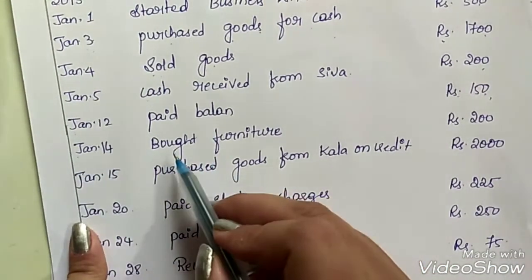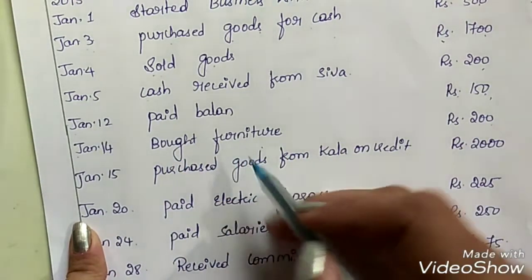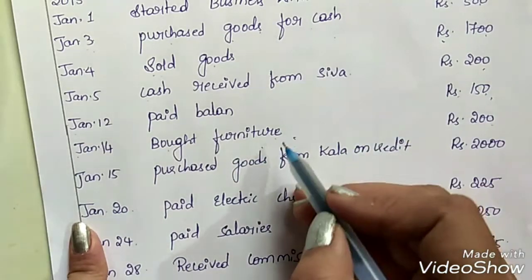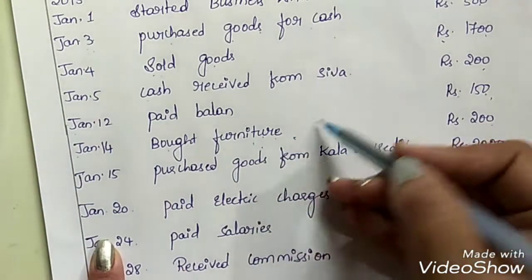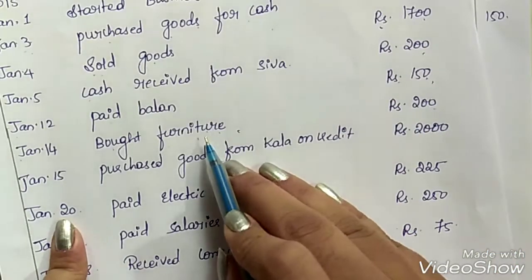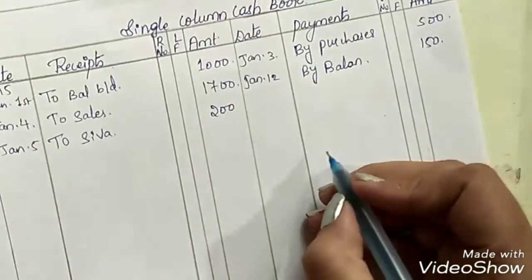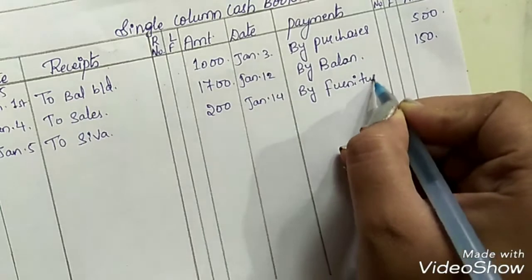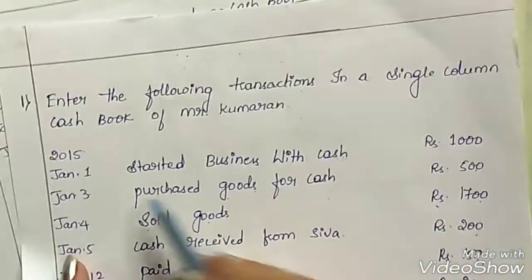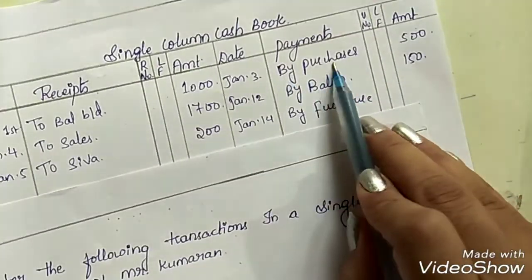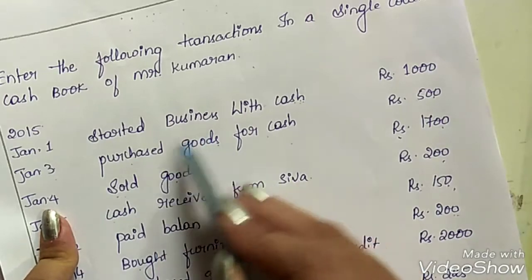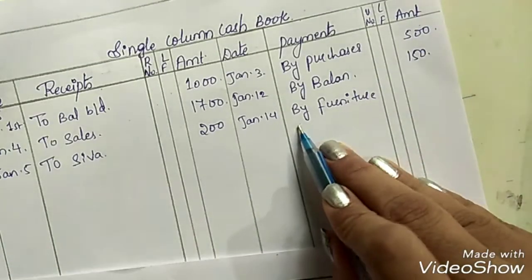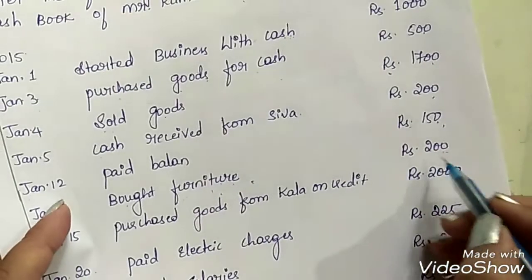On January 14th, bought furniture Rs. 200. Here it is specifically given that we are purchasing furniture — we are making a payment of cash to purchase the furniture, so it should be recorded on the payment side. Note: in the previous transaction we used 'by purchases' because the type of goods was not specified. Here it is clearly furniture, so we write 'by furniture,' not 'by purchases.' Entry: January 14th, by furniture, Rs. 200.